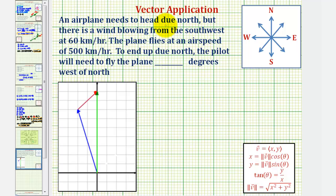An airplane needs to fly due north, but there is a wind blowing from the southwest at 60 kilometers per hour. The plane flies at an airspeed of 500 kilometers per hour. To end up due north, the pilot needs to fly how many degrees west of north?